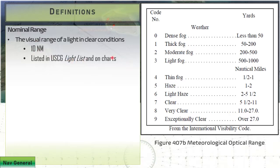The visual range of light in clear conditions. Here our conditions are listed. This is something you can find in Bowditch and also printed in the light lists themselves, with visibility codes that reflect the range of visibility.